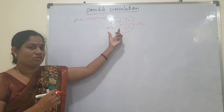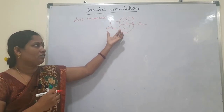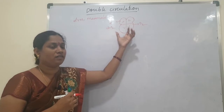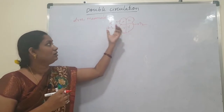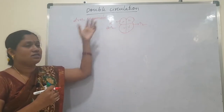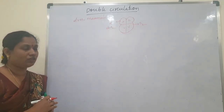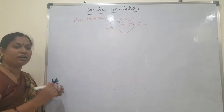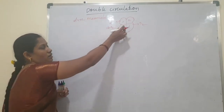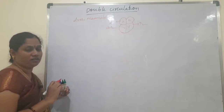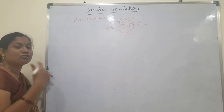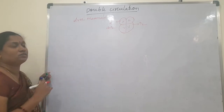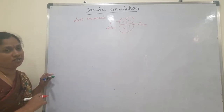The right side circulates deoxygenated blood. These oxygenated and deoxygenated blood cannot mix in double circulation. Double circulation means the blood flows twice through the heart — that's why it is called double circulation.